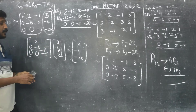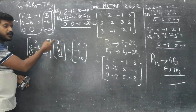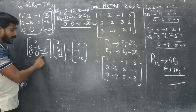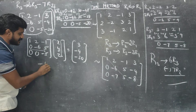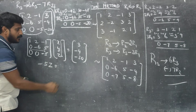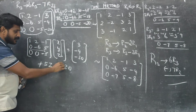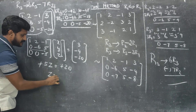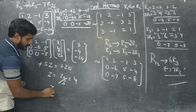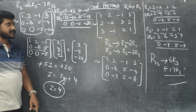From the last row: minus 5z equals minus 20. The minus signs cancel, so z equals 20 divided by 5. Therefore, z equals 4 — this is the first answer.